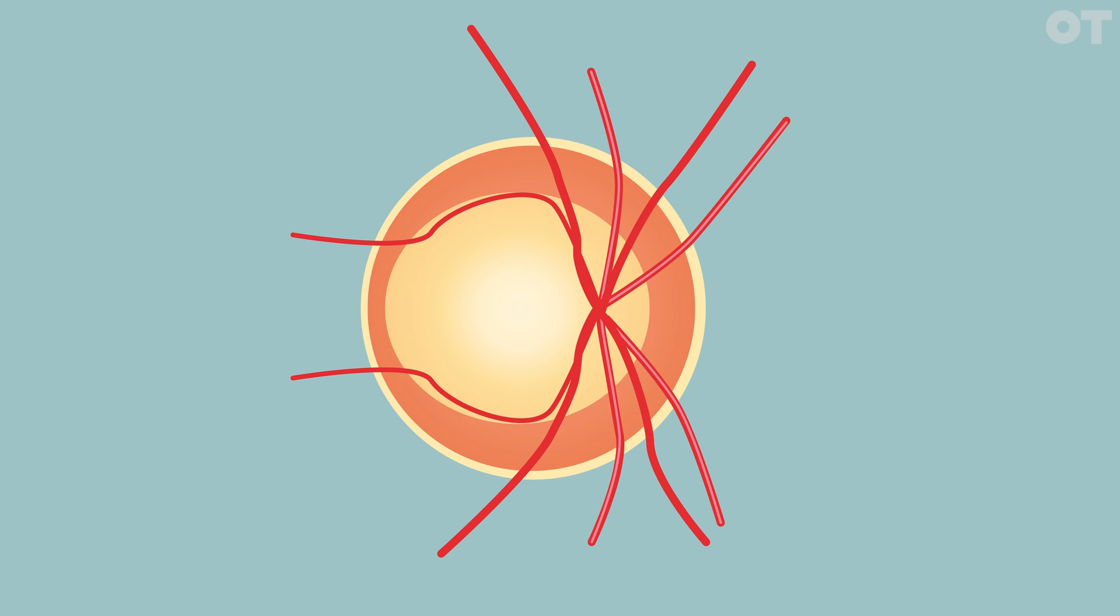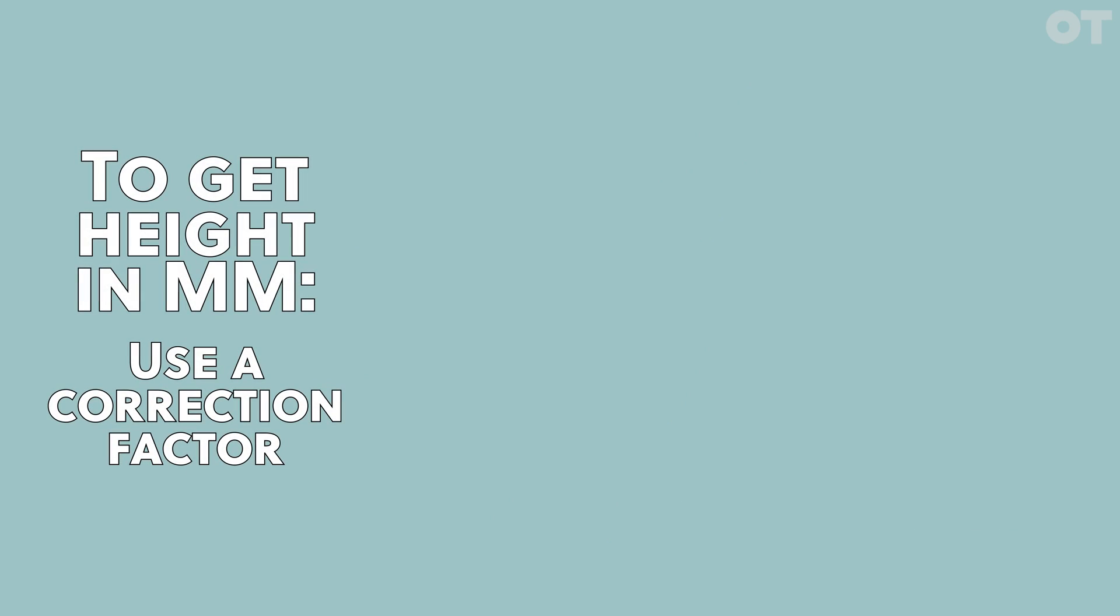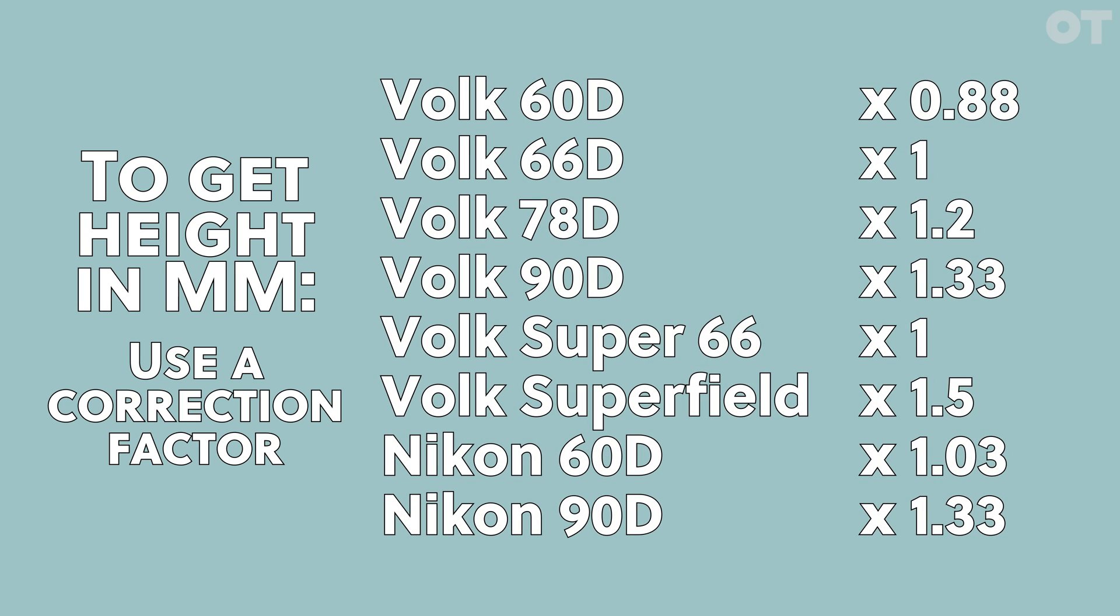To measure the vertical disc size, aim your slit beam at the disc or just next to it and adjust the height of the beam to match the superior and inferior disc margins. Then read off the height of the disc from the scale on the slit lamp. To get the height in millimeters, you need to multiply your measurement by a different factor depending on which lens you used. These are on screen now.